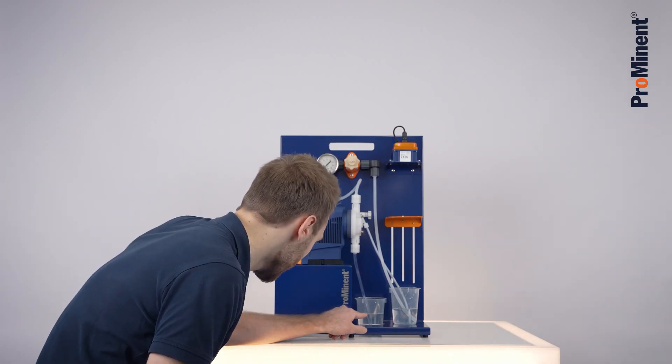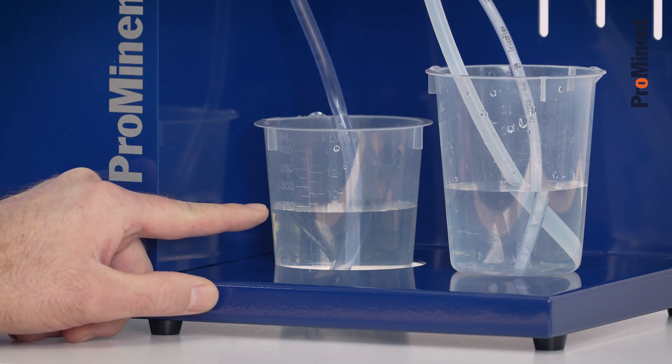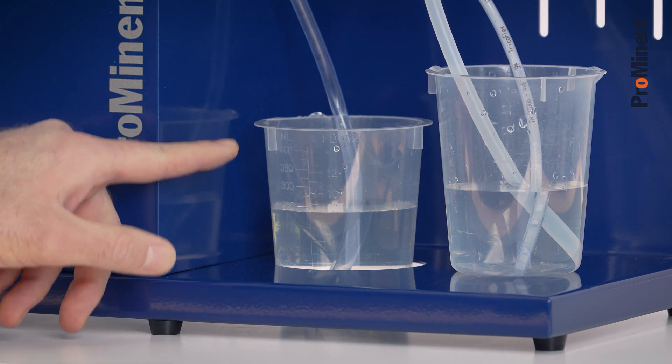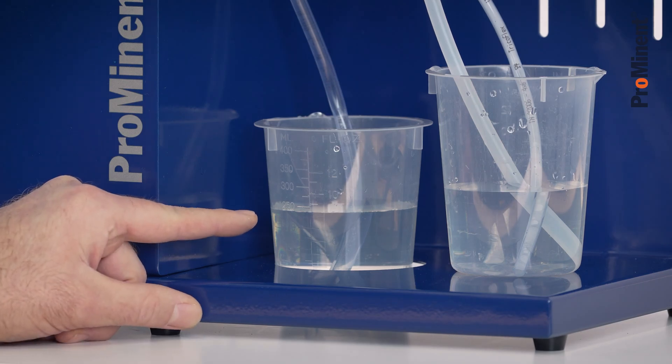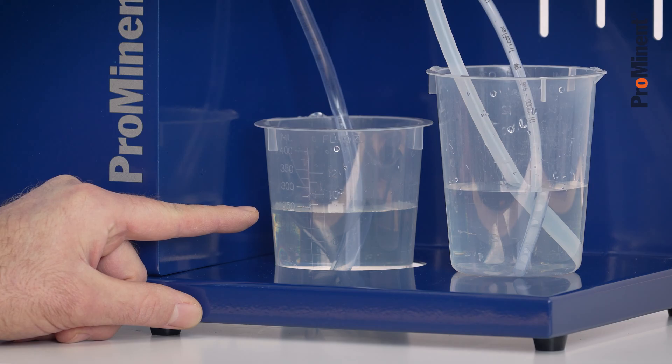While checking the calibration vessel we can see that there are 240 milliliters left. We started with 400 milliliters, we are now at 240 milliliters. That means our pump has pumped 160 milliliters.